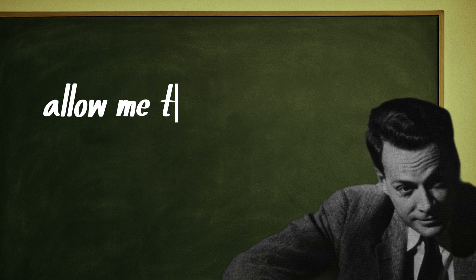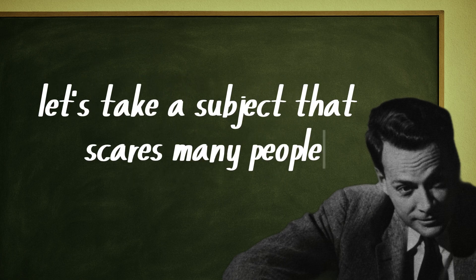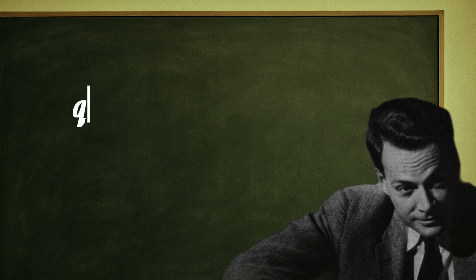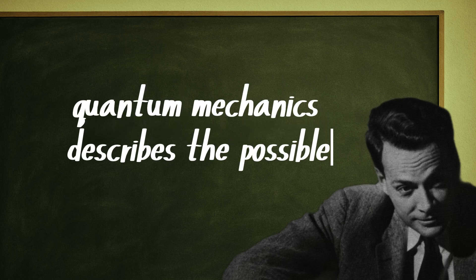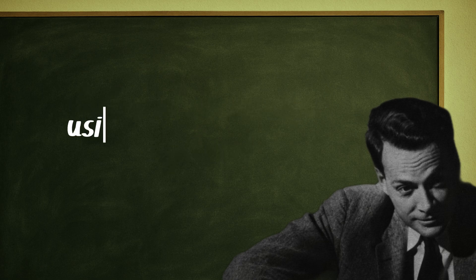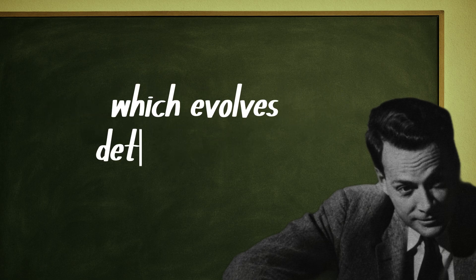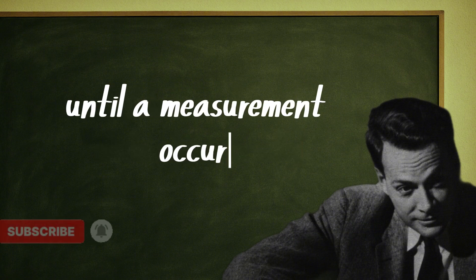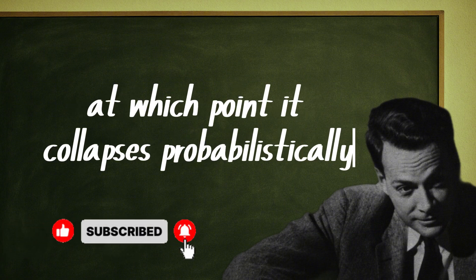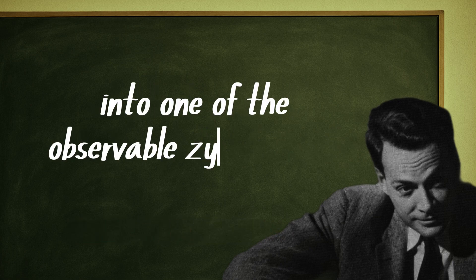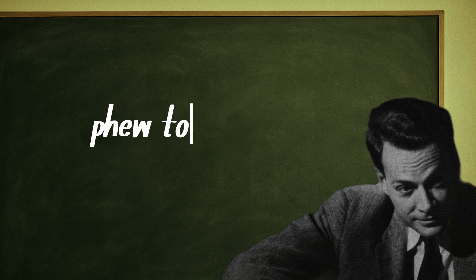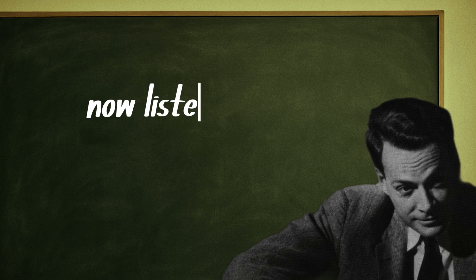Allow me to show you an example. Let's take a subject that scares many people: quantum mechanics. Quantum mechanics describes the possible states of microscopic systems using wave functions governed by Schrödinger's equation, which evolves deterministically until a measurement occurs, at which point it collapses probabilistically into one of the observable eigenvalues. Phew, tough, right?